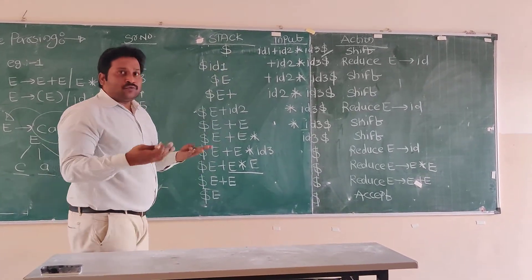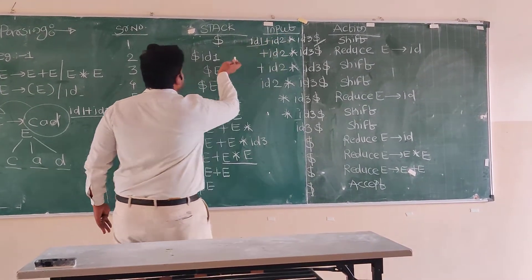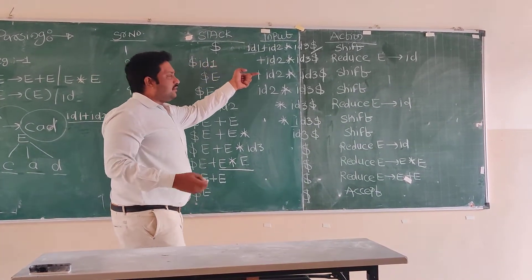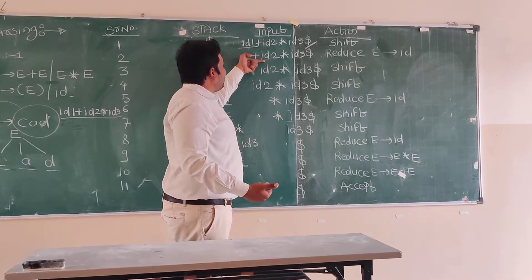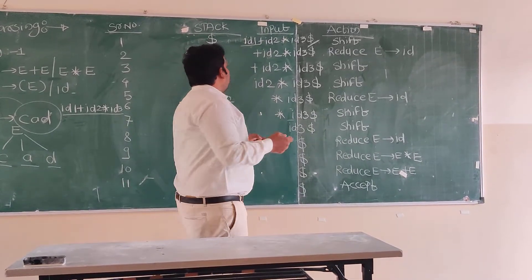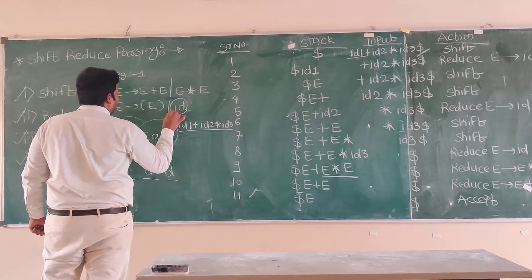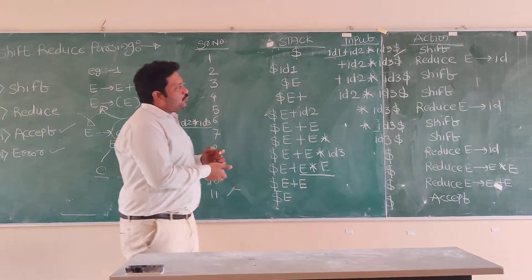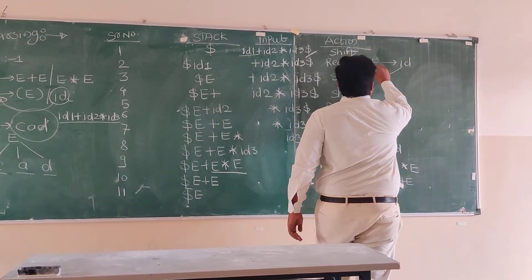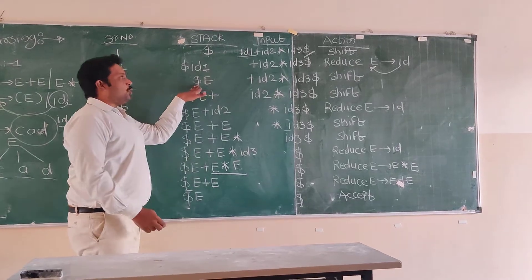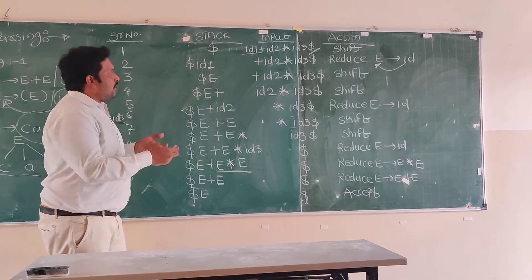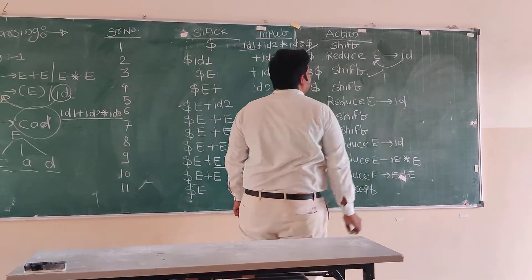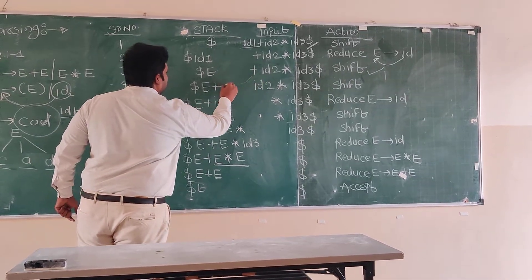The first action is shift. We shift the input into the stack. So in the second step, id1 is shifted to the stack and what remains in the input is plus id2 star id3. Now id1 is reduced to E — we know this is already available in the grammar, so we reduce id to E. The stack now has dollar E. Next, the function is shift, so plus is shifted to the stack. The stack is now dollar E plus.